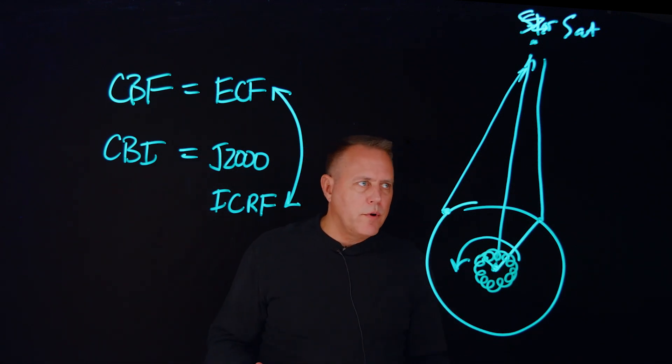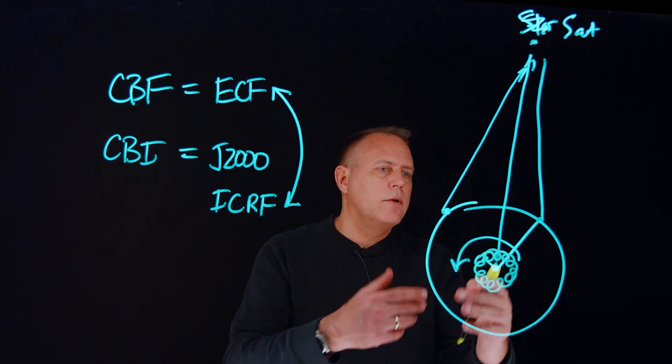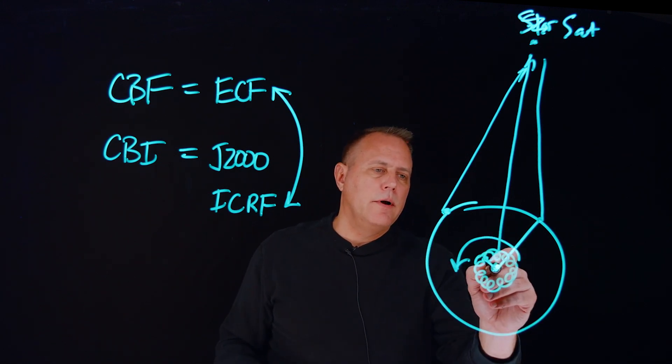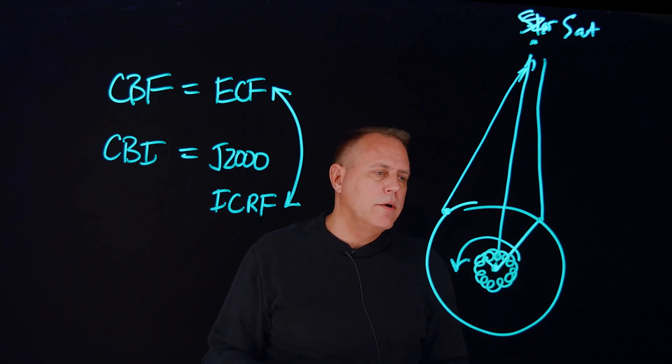And so what our earth orientation parameters are doing for us is describing these additional subtle effects, where this can be on the order of 30 meters or so difference in the magnitude here.